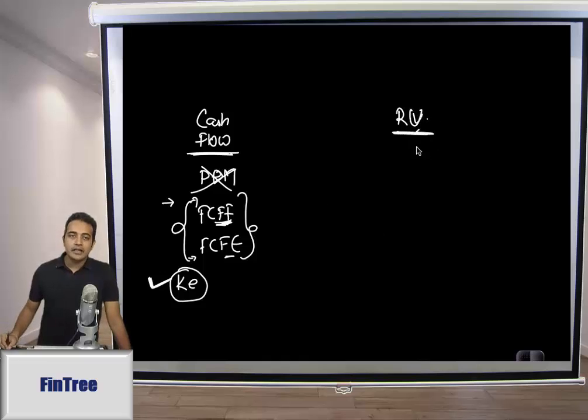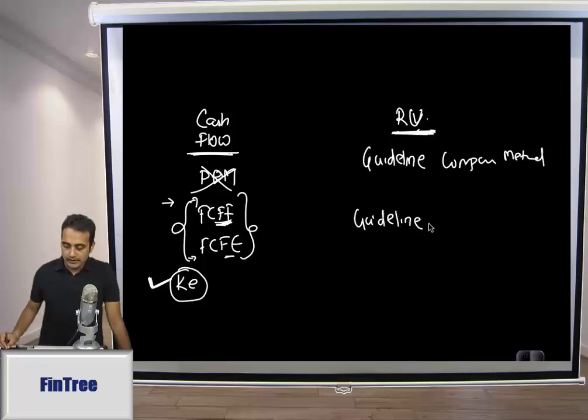Alternatively, you might also use a relative valuation. So there are two ways of approaching this: there is a guideline company method and there is a guideline transaction method.